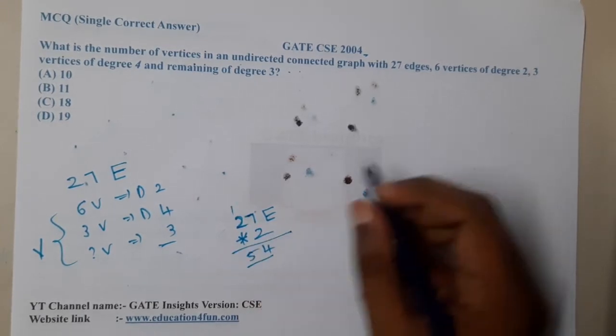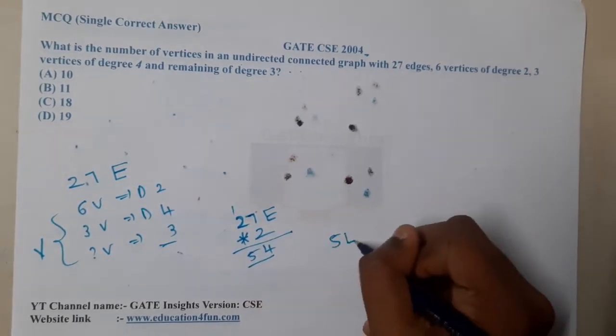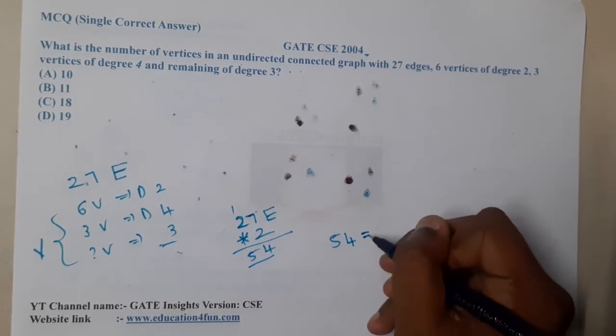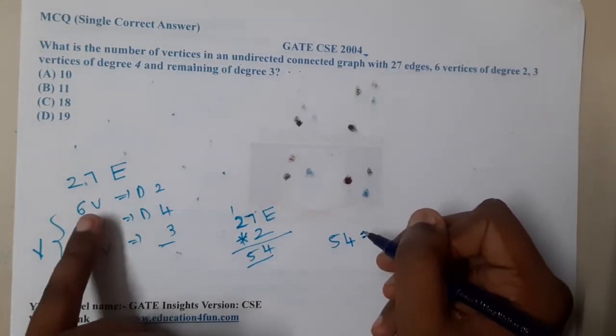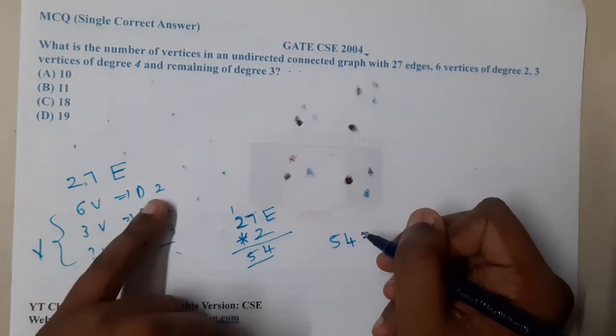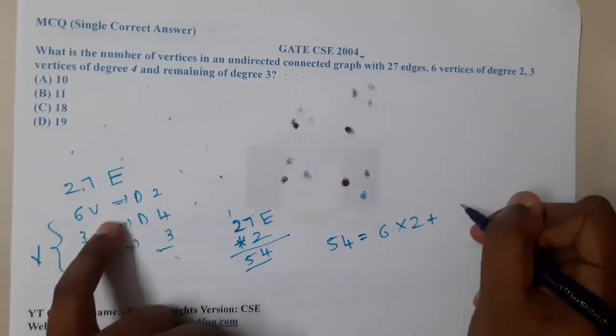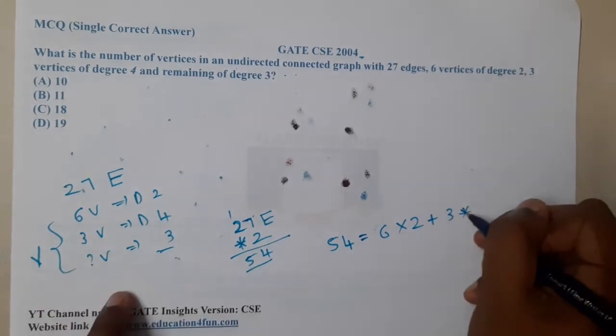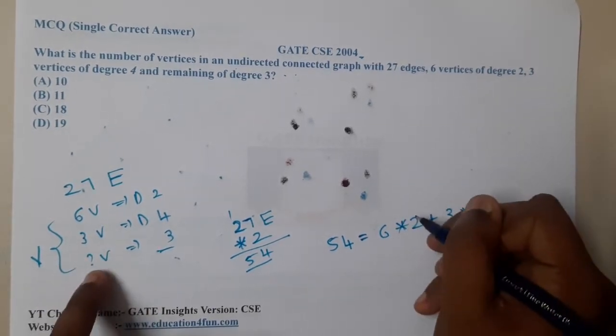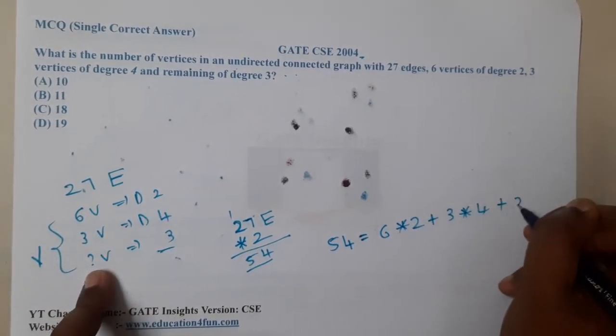So it is 54. A total of 54 degree is possible. We already know that the degree of 6 vertices is 2, so it is 6 into 2. Similarly, 3 into 4 is that degree, and similarly this value we don't know, so let us assume it as x, so x into 3.